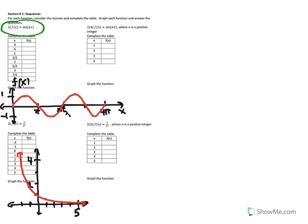So what is a sequence? If you look at what we have here, we have a real-valued function where the input variable x can represent any real number. What we have for 1b is a sequence — it's the same rule as 1a, but it's a sequence because the input variable is now n, and n is a positive integer. So the output values of the sequence are a subset of the output values of the corresponding real-valued function.